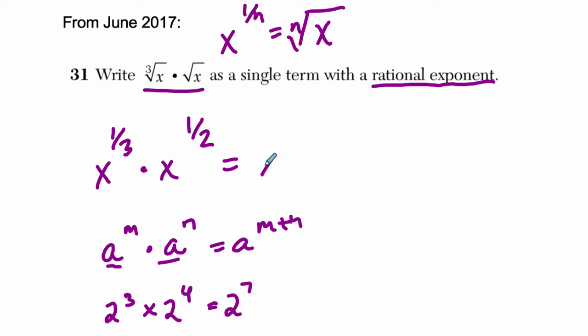So here, you're just going to add. It's 1 third, which is 2 sixths, plus 1 half, which is 3 sixths, and that gets you x to the 5 sixths. That's our answer right there.